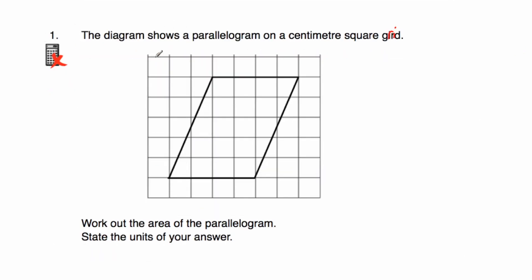Let's have a look at question number one. We've been given a parallelogram on a centimeter square grid, where each square measures one centimeter by one centimeter. We're asked to work out the area of the parallelogram and state the units. There are a few different ways we can do this: one way is to count the whole squares and combine part squares; another way is to chop off a triangle and rearrange it to make a rectangle; or alternatively, you could use the formula.